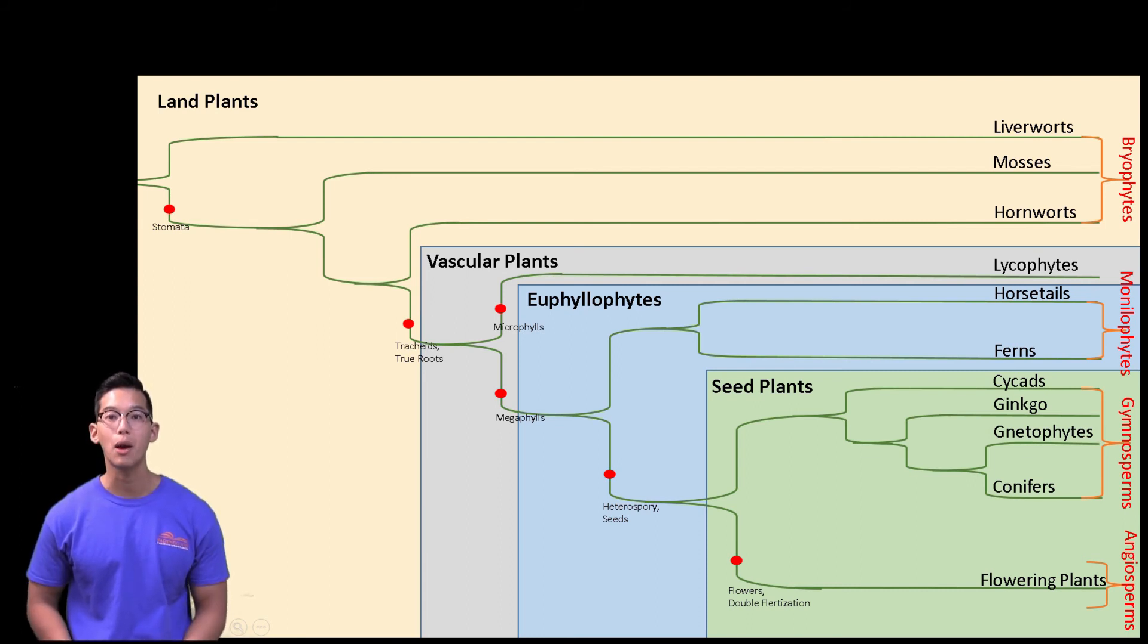For the exam, you should have this phylogenetic tree memorized. Remembering the order will allow you to know which groups have what synapomorphies. Looking at our phylogenetic tree, notice that the plants become more complex with the increasing branching. To help you remember this, use the following phrase to remember the non-seeded plants.